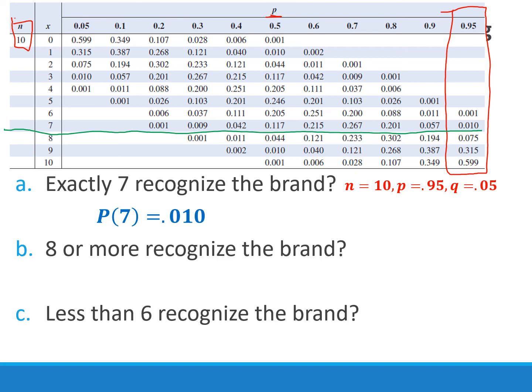What's the probability that eight or more recognize the brand? For this, it's as simple as just taking eight or more and adding them up: 0.075 plus 0.315 plus 0.599 gives us 0.989. And the probability that less than six recognize the brand? For this problem, there's nothing here that's below six. These are all empty. Remember, less than six doesn't include six, so this is approximately zero.